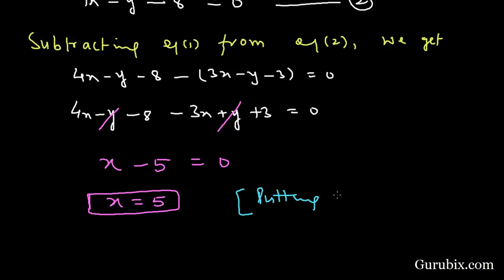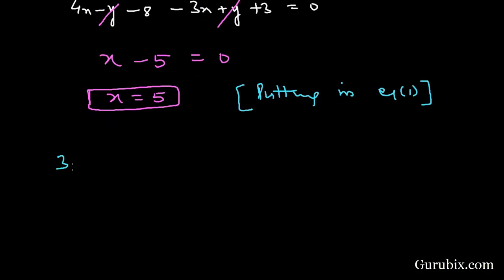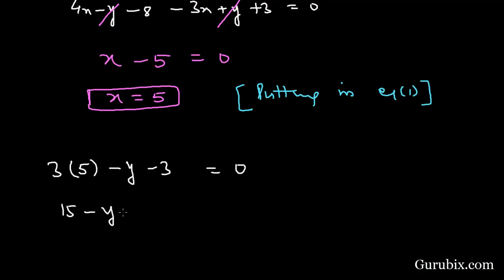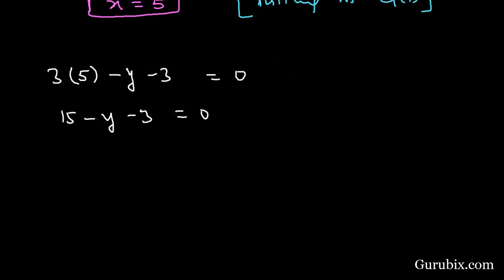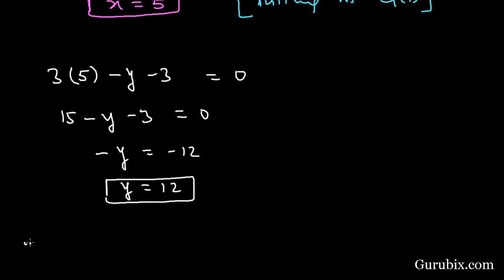Now we substitute x = 5 into equation number 1: 3(5) − y − 3 = 0, which gives 15 − y − 3 = 0. Solving further, −y = −12, so y = 12. Therefore the required fraction is 5 over 12.